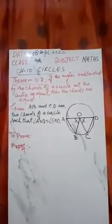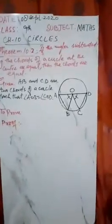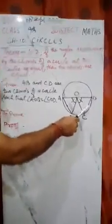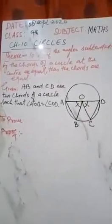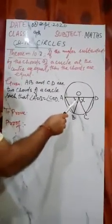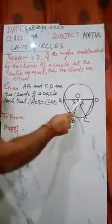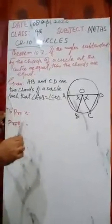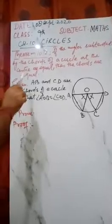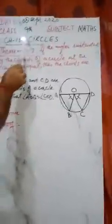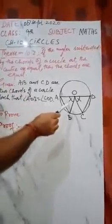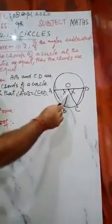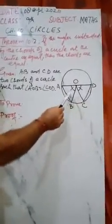In the previous video we discussed that two chords AB and CD are equal, and we had to show that the angles at the center are equal. Now in this video, we have to show that if the angles at the center are equal, then the chords are equal.